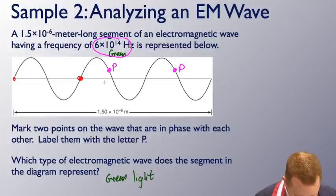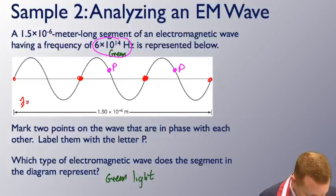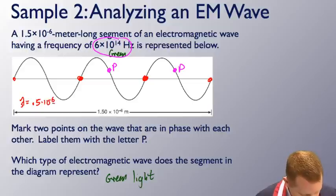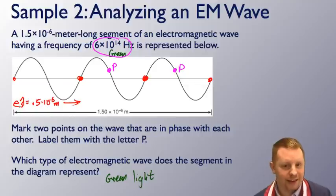So if we have three full waves and 1.5 times 10 to the minus 6 meters, I would say that our wavelength would be one-third of that or 0.5 times 10 to the minus 6 meters, that distance. So we could find the wavelength right from the diagram too. Of course, we could calculate it using v equals f lambda as well if we wanted to.